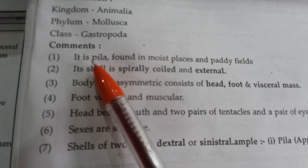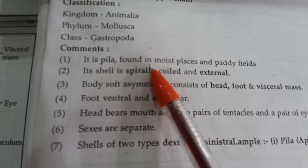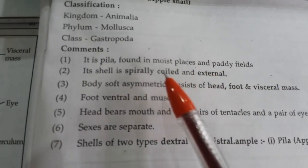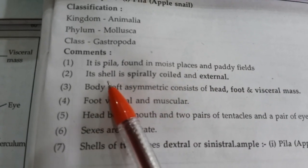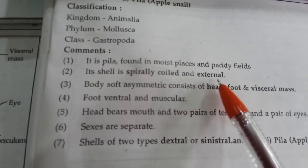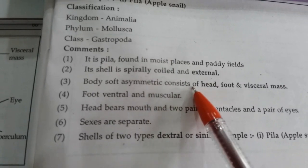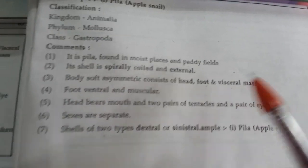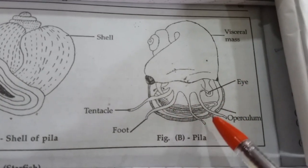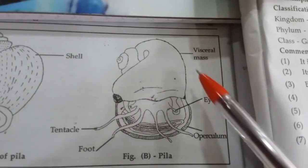This is Pyla, and it is found in moist places and paddy fields. It shows the presence of a shell, which is spirally coiled and external. The body is soft and asymmetrical, consisting of a head, foot, and visceral mass. This is the head, this is its foot, and this is its visceral mass.